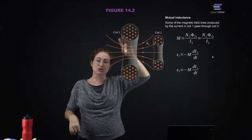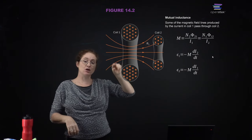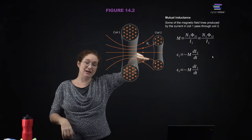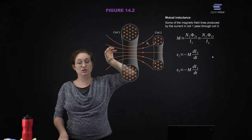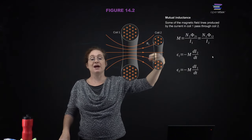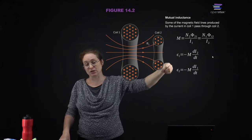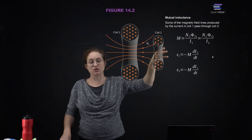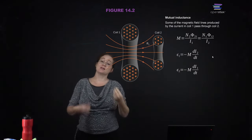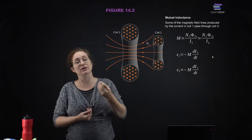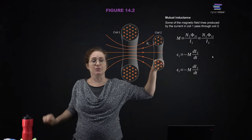Here you can see two coils. Coil one has current flowing through it, and that current leads to a magnetic field. As this current changes and changes the magnetic field through coil two, that in turn induces a current in the second circuit element. This is mutual inductance. This is how transformers work when you want to change the voltage from whatever comes from the line to some other voltage.